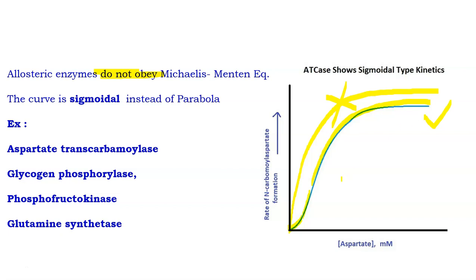Examples of allosteric enzymes include aspartate transcarbamylase, glycogen phosphorylase, phosphofructokinase, and glutamine synthetase. In the next class we are going to study aspartate transcarbamylase in detail. Hope you understood the concepts of allosteric enzymes well. Thanks for watching.